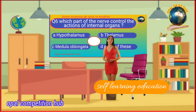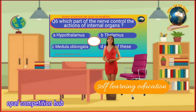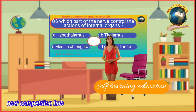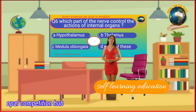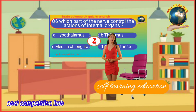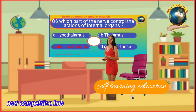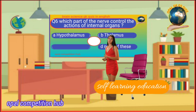Question number 6: Which part of the nerve controls the action of internal organs? Option A: Hypothalamus. Option B: Thalamus. Option C: Medulla. Option D: None of these. Your time starts now. Your answer will be Option C: Medulla Oblongata.